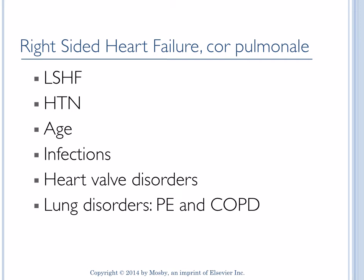Hello students, this is my second part of the heart failure lecture. In the last one I explained about left-sided heart failure, and now in the second part I am explaining about right-sided heart failure, which is also known as cor pulmonale. Right-sided heart failure occurs when the right ventricle doesn't contract effectively, causing blood to back up into the right atrium and the peripheral circulation, which leads to peripheral edema and engorgement of the kidneys and other organs.